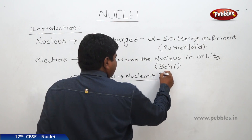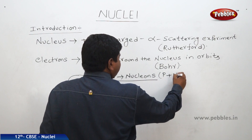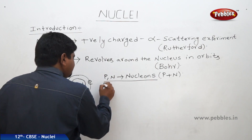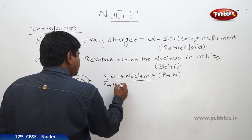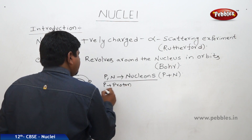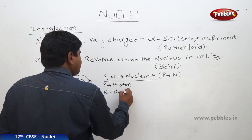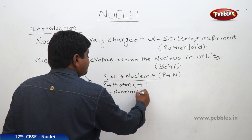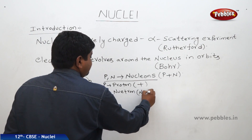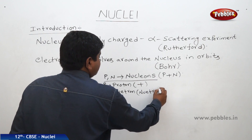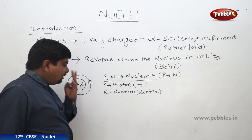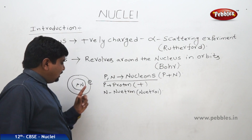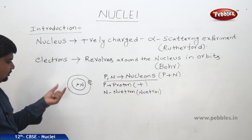Protons and neutrons are the particles present inside the nucleus, and they are collectively called nucleons. Nucleons = number of protons (P) plus number of neutrons (N). Proton charge is positive, neutron charge is neutral. Electrons are also present around the nucleus.